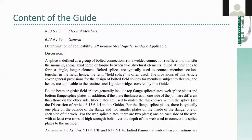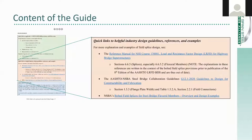Let's go back to that design task quick links page for splices and take a look at the other two boxes. The middle part — the light orange colored box — is labeled 'quick links to helpful industry design guidelines, references, and examples.' You can see here a link to the reference manual for NHI course 1381, which is a great, extremely comprehensive guide. You can also see a link to the AASHTO NSBA steel bridge collaboration guideline G12.1 and NSBA's bolted field splice overview and design examples. When appropriate, some additional wayfinding is provided in the form of reference to particular sections within each one of those documents.